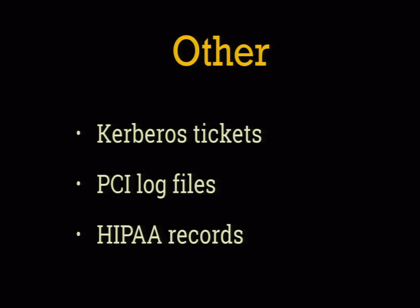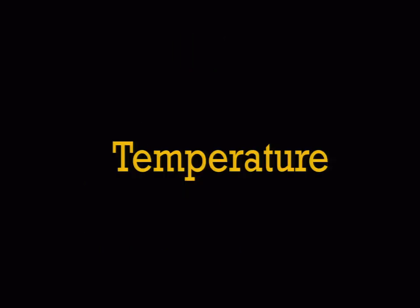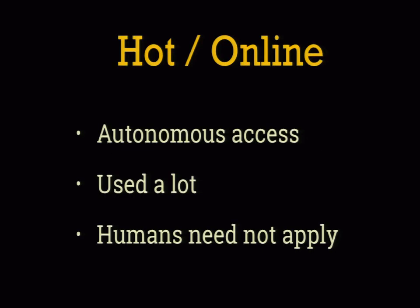And then finally there's a long tail of miscellaneous secrets. Sometimes those miscellaneous things look relatively close to one of the other three — things like Kerberos machine tickets. Or sometimes they look nothing like it, and you're going to have to look at purpose-built systems.